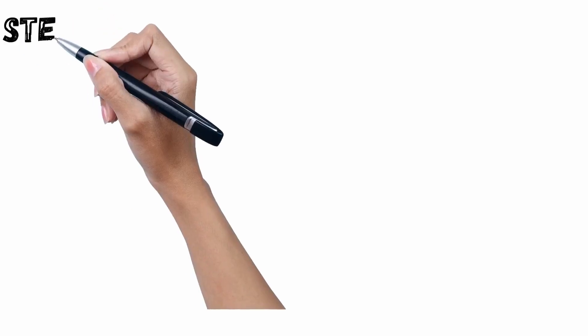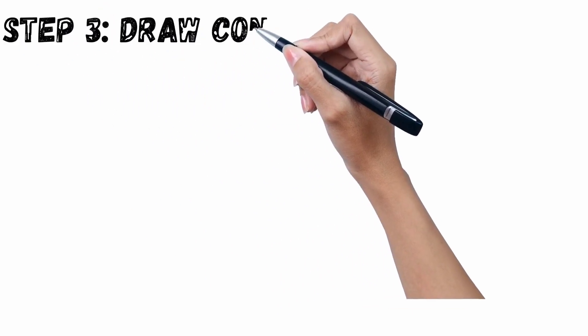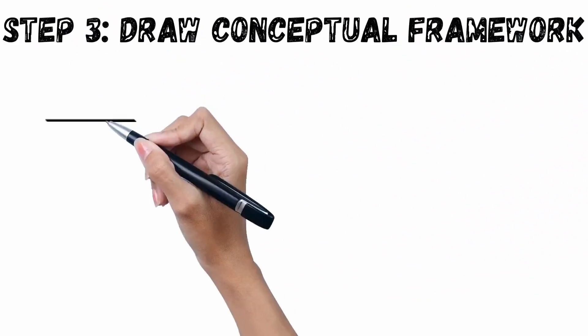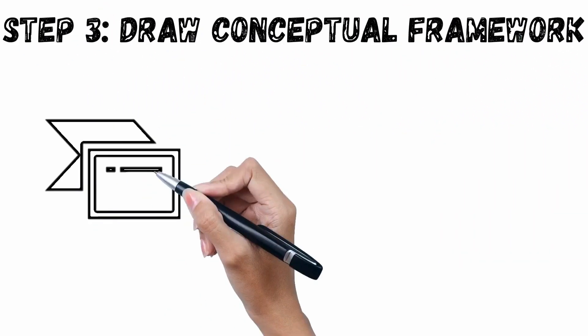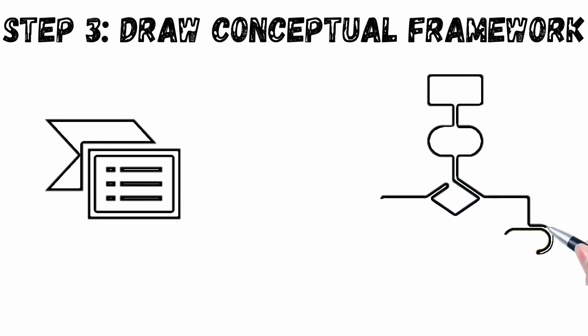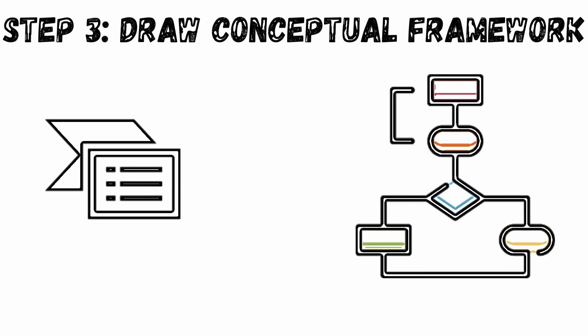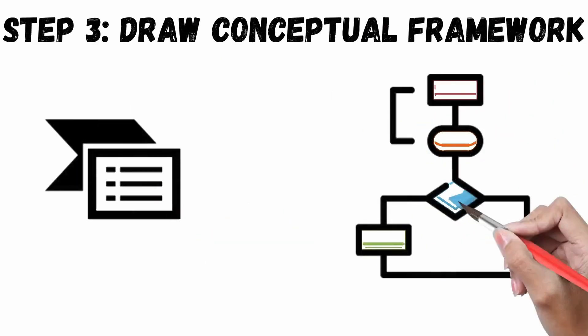Step three: draw your conceptual framework. Once all the relationships between variables have been identified, you can use smart tools like Canva or online diagram tools to create a flowchart. With these simple steps, you will have your own conceptual framework.